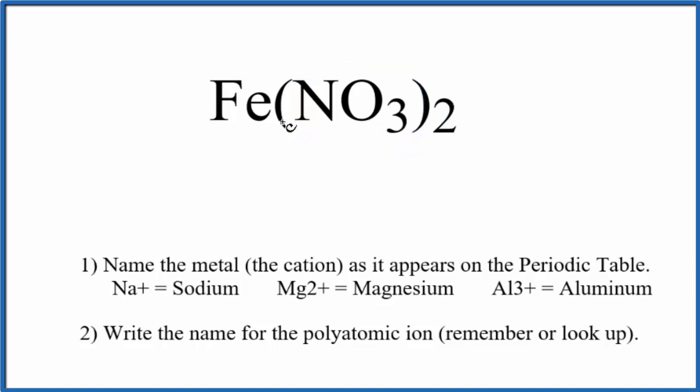So we have the nitrate ion, and it's bonded to iron, which is a transition metal. So let's write the name for the metal first. We're just going to call Fe, that's iron.